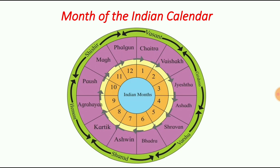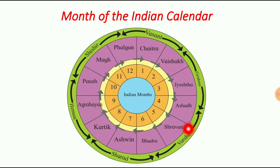ये मराठी में आप जो पढ़ते हो उन महीनों के नाम यहाँ पर write किया है. इसमें भी ऋतु बताई हैं — जैसा उसमें season था, इसमें भी ऋतु हैं: वसंत, ग्रीष्म, वर्षा, शरद, हेमंत, शिशिर. यहाँ पर six ऋतु होते हैं.